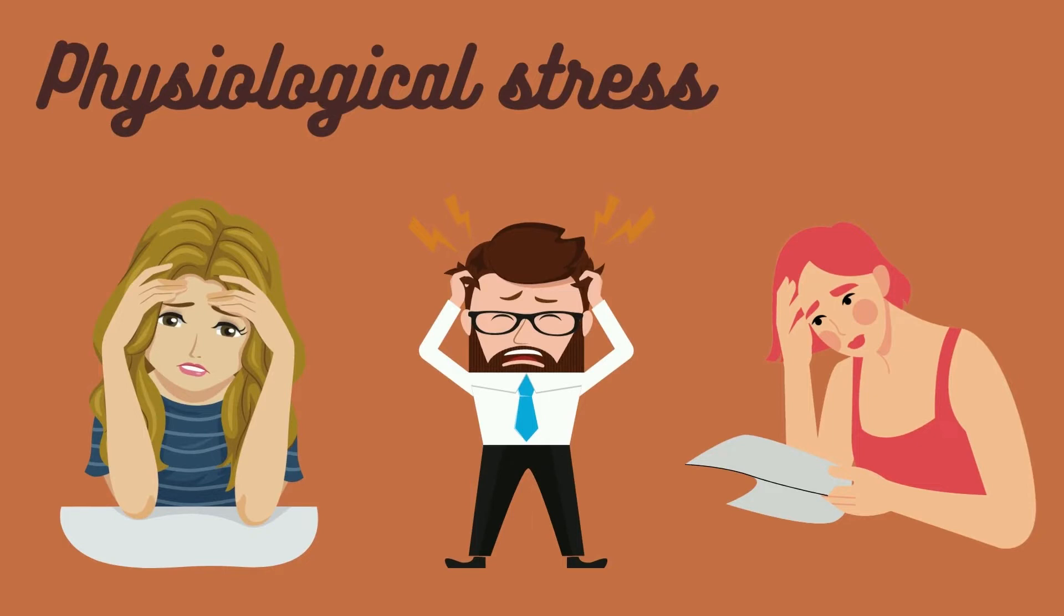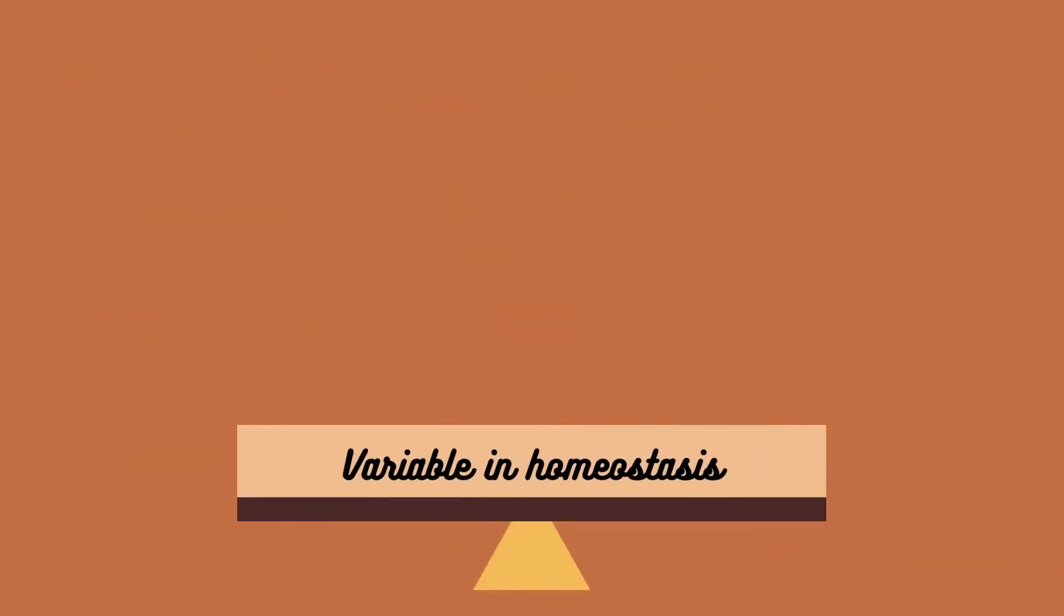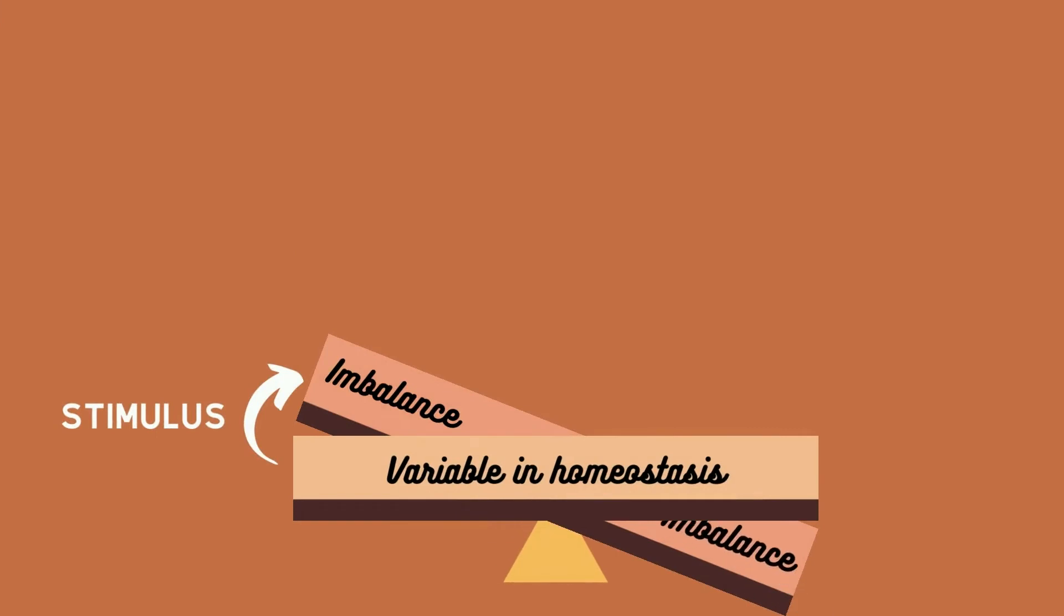Okay, so now let's talk about the mechanism followed in order to return to homeostasis in the case of a homeostatic imbalance. First we have the variable in homeostasis. A stimulus is going to produce a change in this variable. The stimulus could be stepping on a toy on the ground, for example.